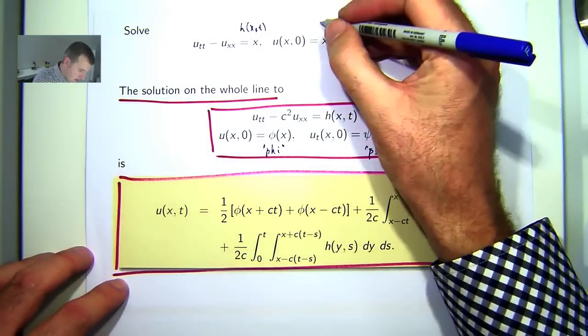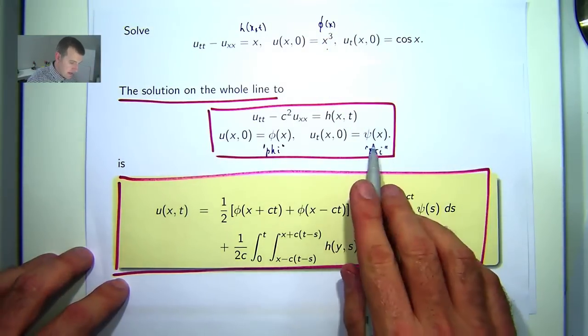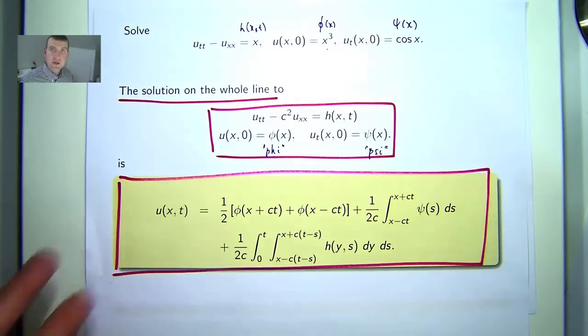Phi would be x cubed. And psi would be cos x.